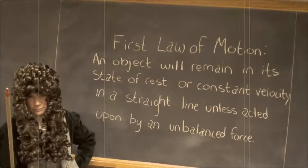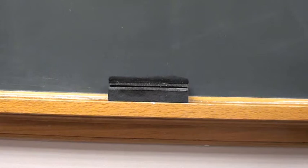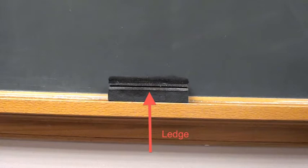Let's break it down a bit. If an object, say this eraser, is not moving, then we can come to the conclusion that all the forces acting upon it are equal. There are two forces acting upon the eraser: first is the force of gravity, which is pulling the block down; second is the force of the ledge on the eraser. And since the eraser is not moving, these two forces are equal or balanced.